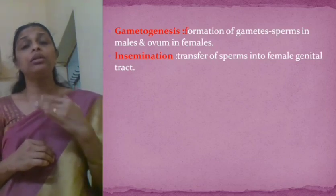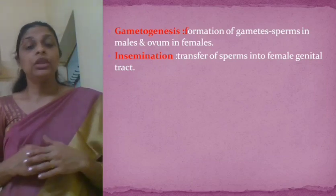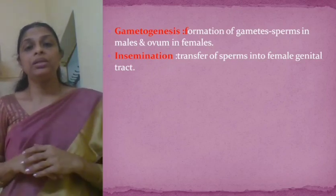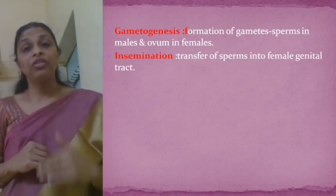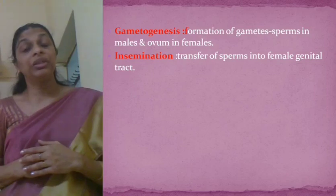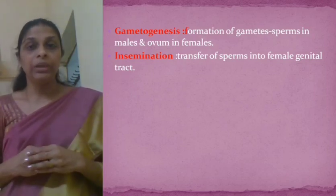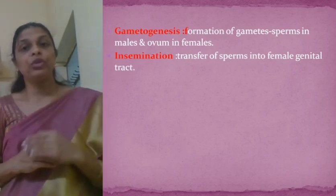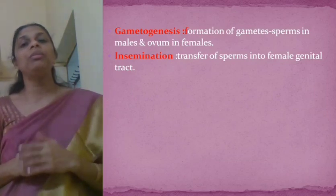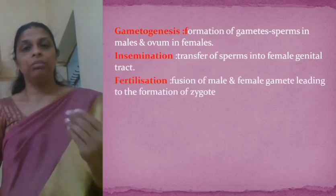After the formation of gametes, the next step is fusion of gametes. Before fusion, the male gametes have to be transferred into the female genital tract because in human beings fertilization is internal. This transfer of sperms into the female genital tract is called insemination, which is the second major event.